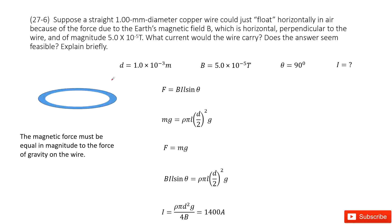So that means the magnetic force must be equal in magnitude to the force of gravity on the wire. So the magnetic force equals gravity.